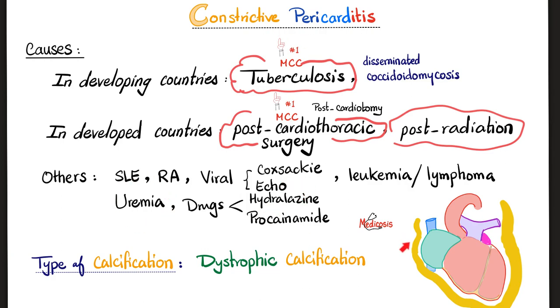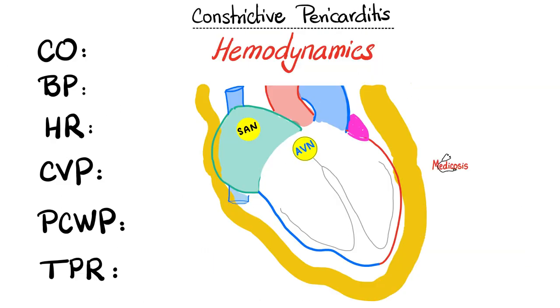What type of calcification is this? Is it dystrophic or metastatic calcification? Since the calcification is local, caused by something local, it is dystrophic calcification most of the time.